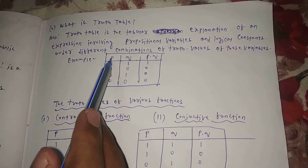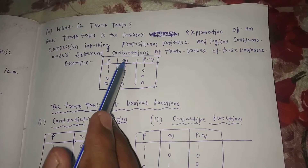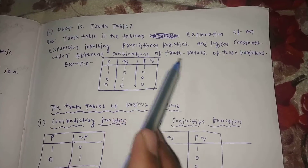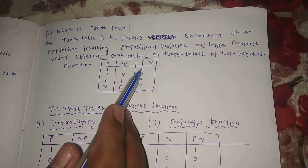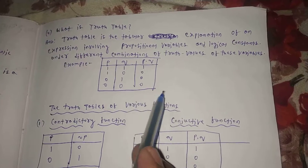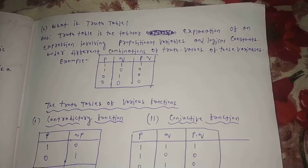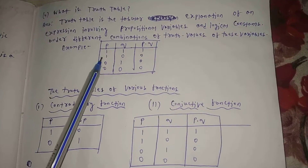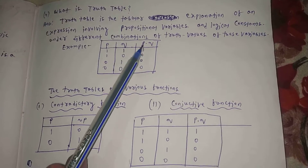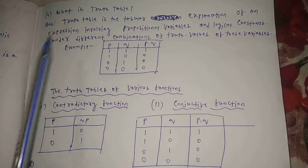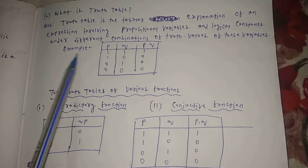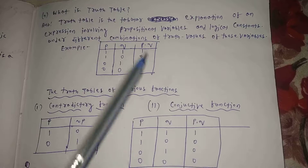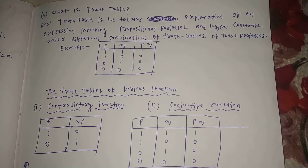For example, with P and Q: P takes values 1, 1, 0, 0 and Q takes values 1, 0, 1, 0. The conjunction function P conjunction Q gives values 1, 0, 0, 0. Here conjunction is the logical constant, and P and Q are the propositional variables expressed in the table.